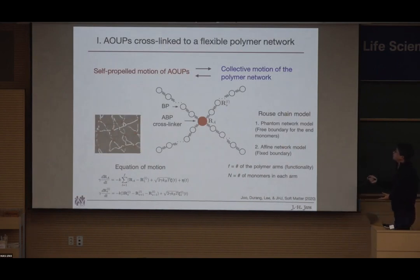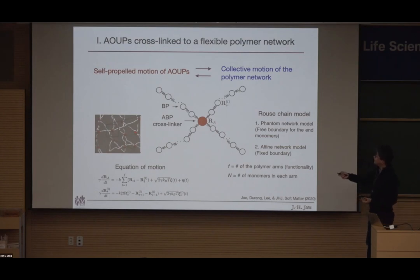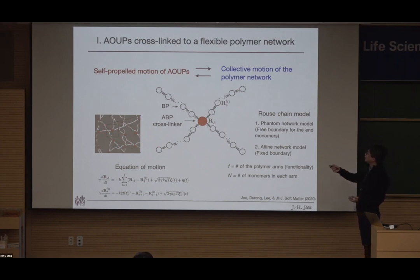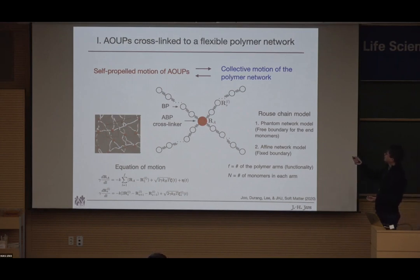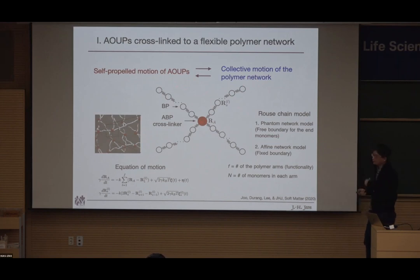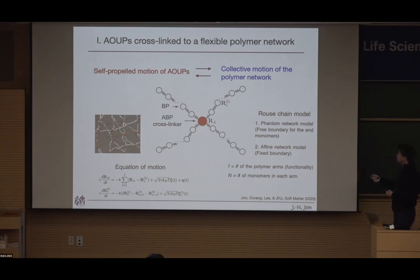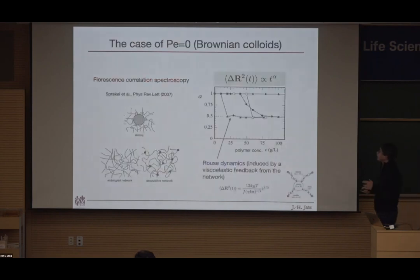The active cross-linker is connected to polymer arms, and its motion affects the polymer network, which in turn feeds back to the active particle, producing strange correlations. We start with a flexible Rouse polymer with this active particle — easily simulated. The motivation came from an experimental paper studying colloid dynamics in viscoelastic gel networks, where they found that when the colloid is sticky to the polymer network, they all show MSD with exponent alpha ≈ 0.5, independent of the network type.